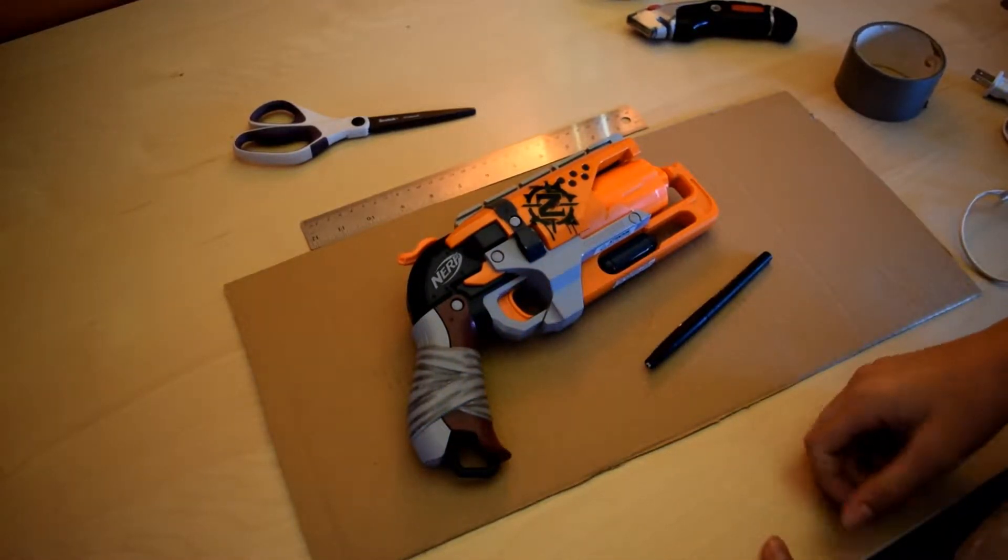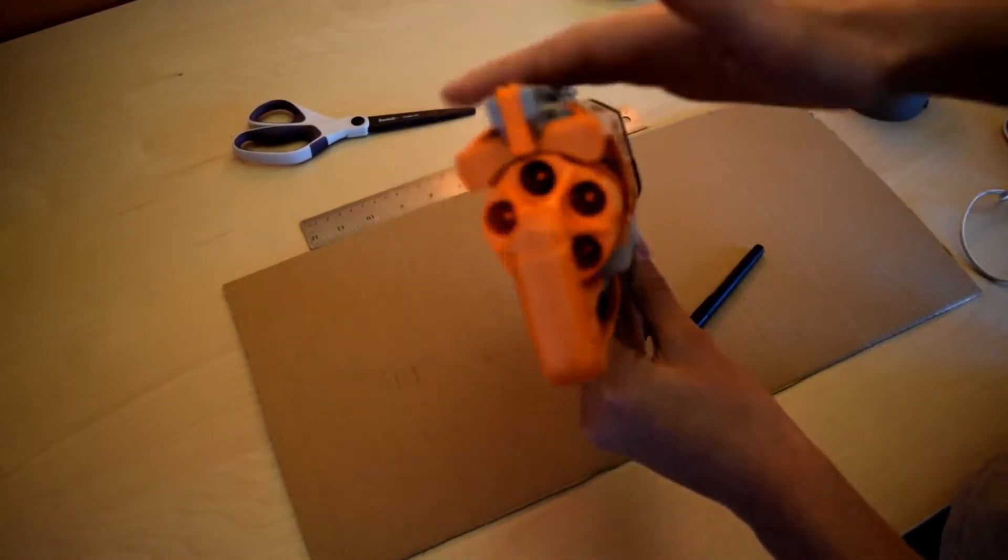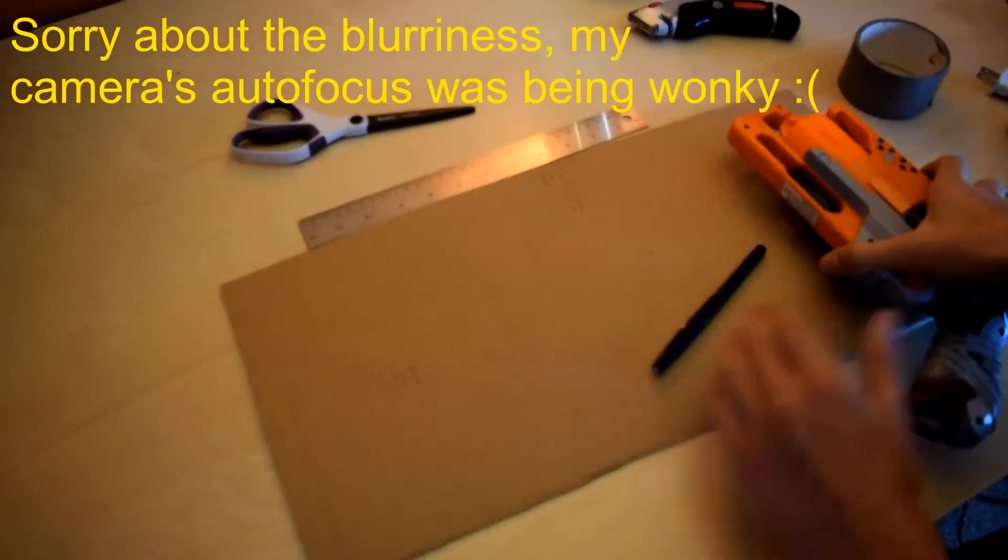The first step in making a Nerf holster is to measure the dimensions of your blaster so that it will fit perfectly. A blaster has roughly four sides, two sides top and bottom, so we're going to measure those.